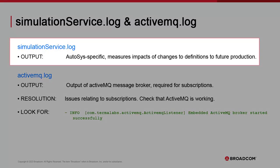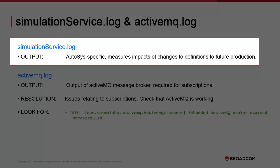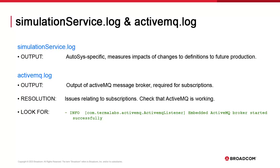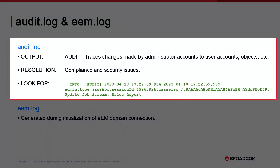The AI simulation service is unique to Autosys integrations. Users have the option of measuring the production impacts of updated job definitions. Whenever users call in the service, these actions are traced in this log. ActiveMQ is a message broker required for subscriptions — this is its log. ActiveMQ should not be a source of problems. Audit.log logs all actions performed by administrator accounts and the clients.